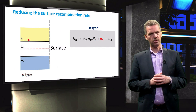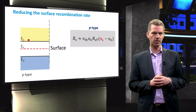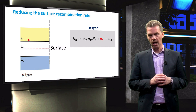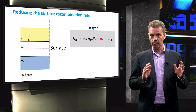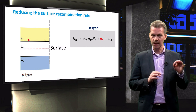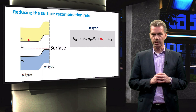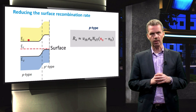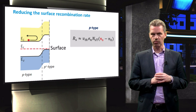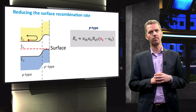The other way of reducing the surface recombination rate is by decreasing the minority carrier concentration at the surface. In this example we look at p-type material. If the material is doped uniformly, the minority carriers — which are electrons in p-type material — can move freely to the surface. But if we apply a highly doped region just underneath the surface, we can create a barrier that will repel the electrons, reducing the minority carrier concentration at the surface and hence the recombination rate.